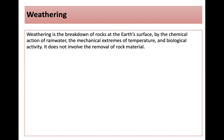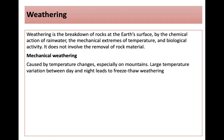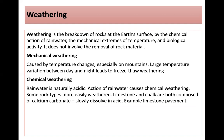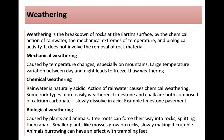Weathering is the breakdown of rocks at the Earth's surface by the chemical action of rainwater, mechanical extremes of temperature and biological activity. It does not involve the removal of rock material. Mechanical weathering is caused by temperature changes, especially on mountains, where large temperature variation between day and night leads to freeze-thaw weathering. Chemical weathering occurs because rainwater is naturally acidic; limestone and chalk, composed of calcium carbonate, slowly dissolve in acid — an example being limestone pavement at Malham in Yorkshire. Biological weathering is caused by plants and animals: tree roots force their way into rocks, splitting them apart, mosses grow on rocks making them crumble, and animals can burrow and trample.